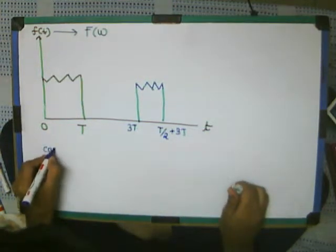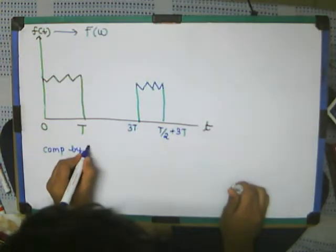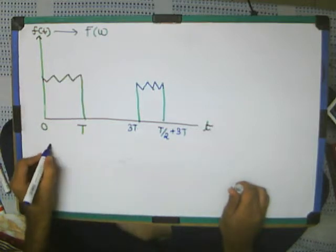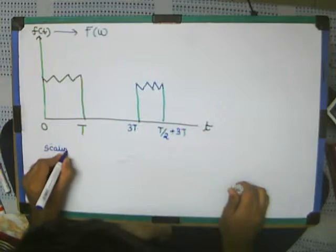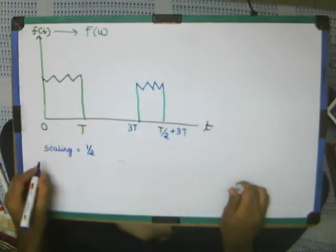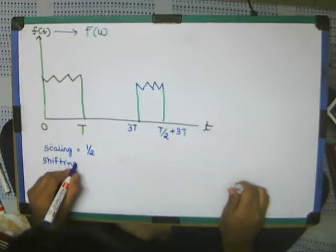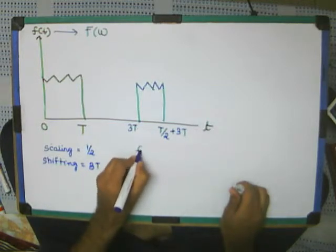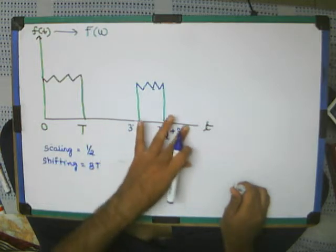So this is compression by factor of 2, and then, or what we can say, compression by factor of 2 means the scaling factor is 1 by 2, and the shifting factor is 3T. Or let me say, 3 seconds only for simplicity.